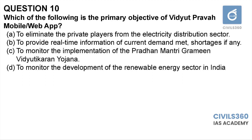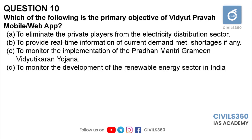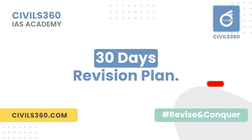Question number ten: which of the following is a primary objective of the Vidyut Pravah mobile web app? A: to eliminate private players from electricity distribution. B: to provide real-time information of current demand met and shortages if any. C: to monitor the implementation of Pradhan Mantri Grameen Vidyutikaran Yojana. D: to monitor the development of the renewable energy sector. Vidyut Pravah is a mobile application that provides highlights of power availability on a real-time basis, including details regarding shortages. Therefore the answer is option B. That's all for today. Questions for Day 27 will be posted tomorrow with solutions in the evening.